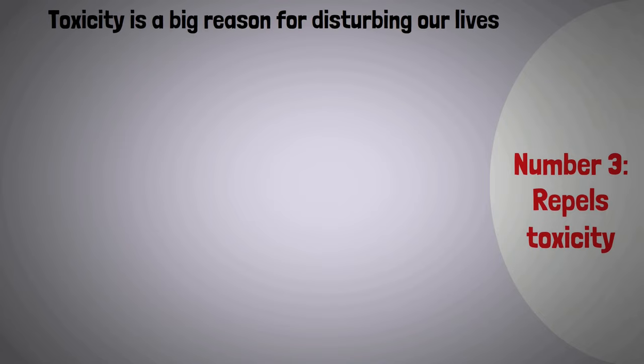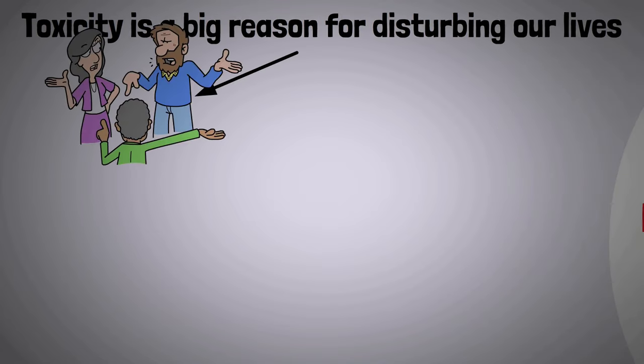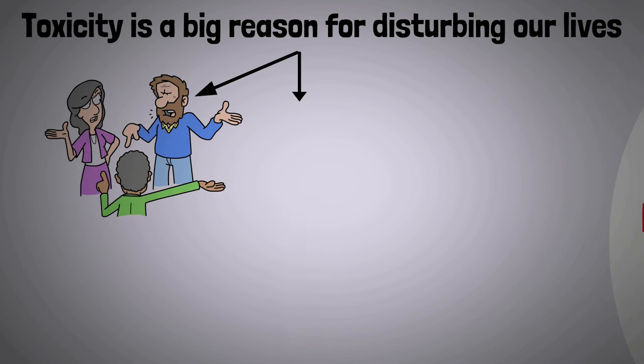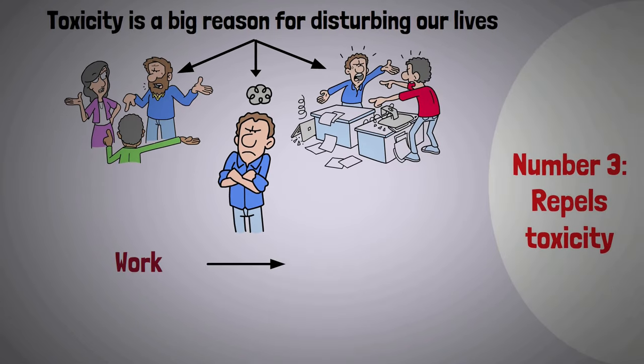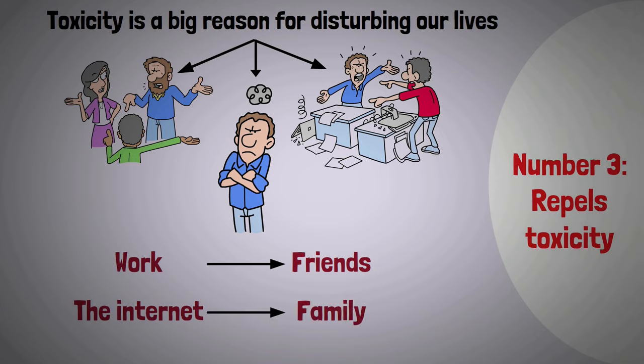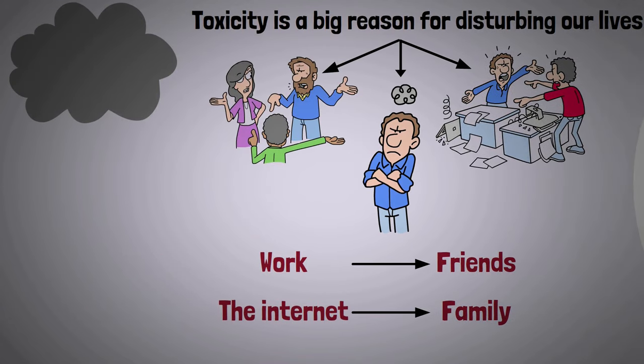Number 3: Repels Toxicity. Toxicity is a big reason for disturbing our lives as it makes relationships bad, messes with our mental health, and stops us from growing. It's everywhere—from work to friends, from the internet to family.